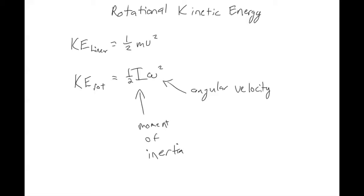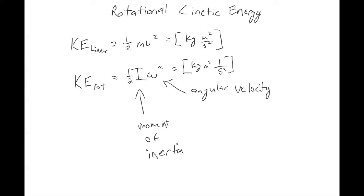If we look at the units for the linear kinetic energy, we've got kilogram meters squared per second squared. For rotational KE, the units for moment of inertia are kilogram meters squared, and the unit for angular velocity is radians per second — or one over second — so you get one over second squared. These two things have the same units, which is good.